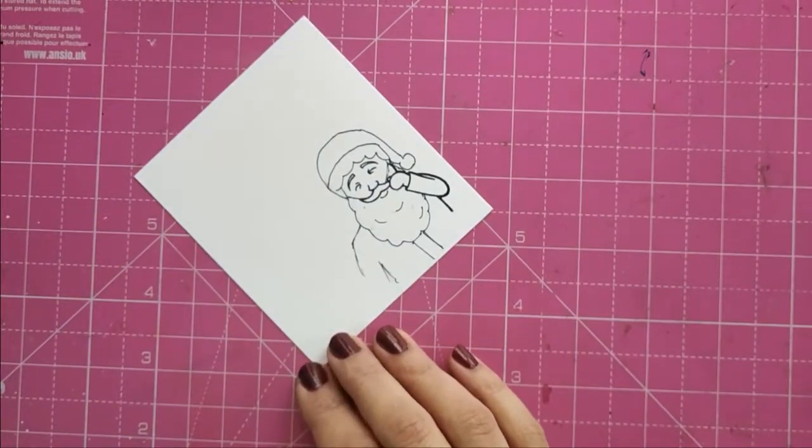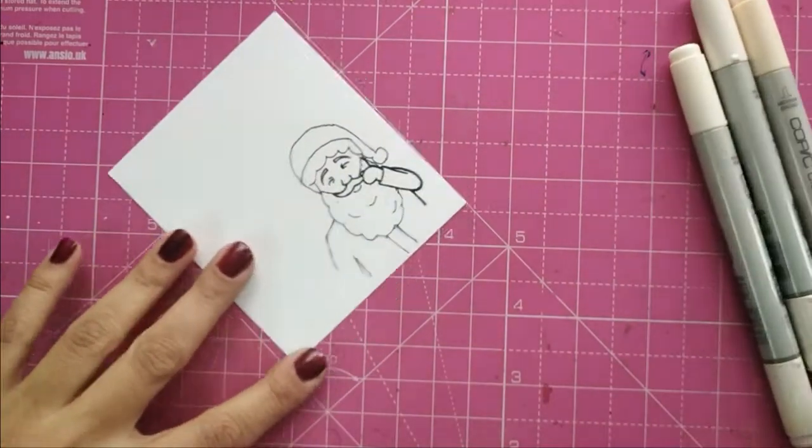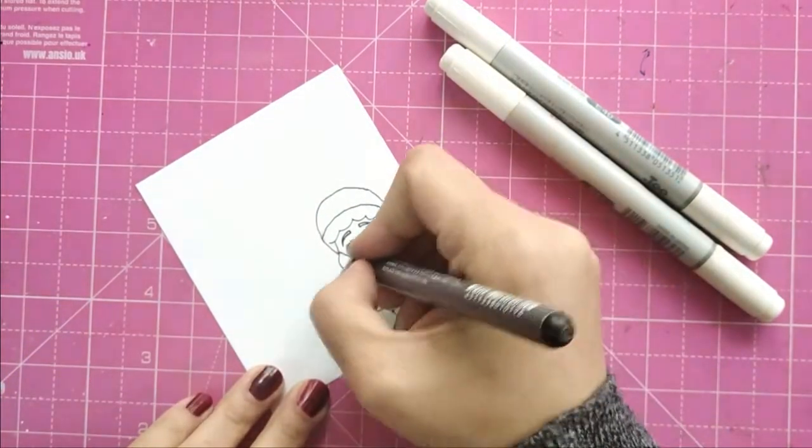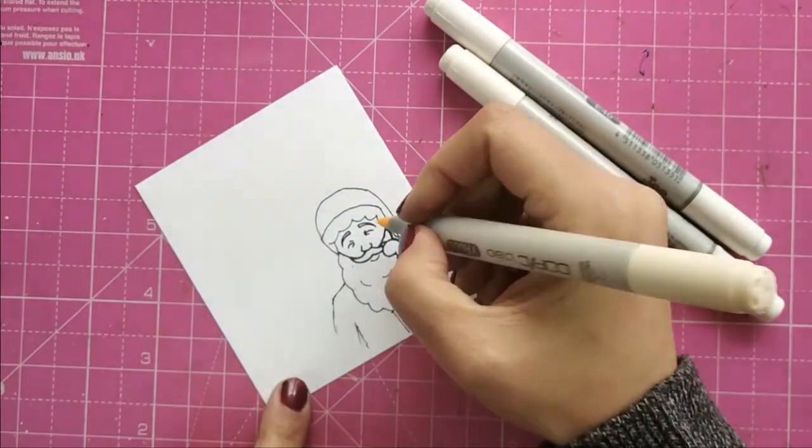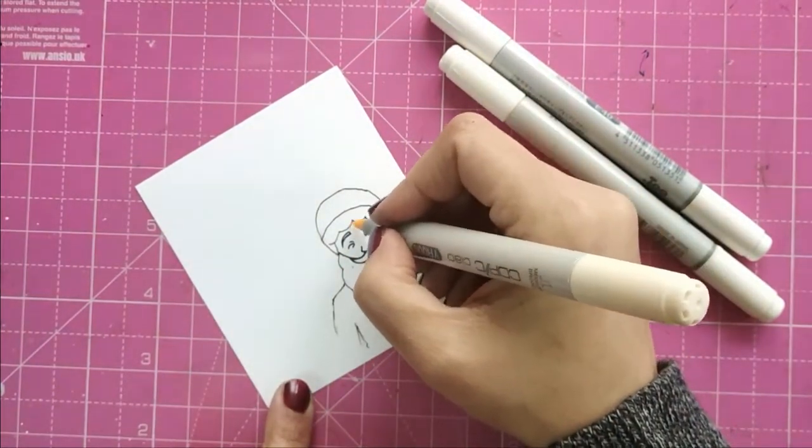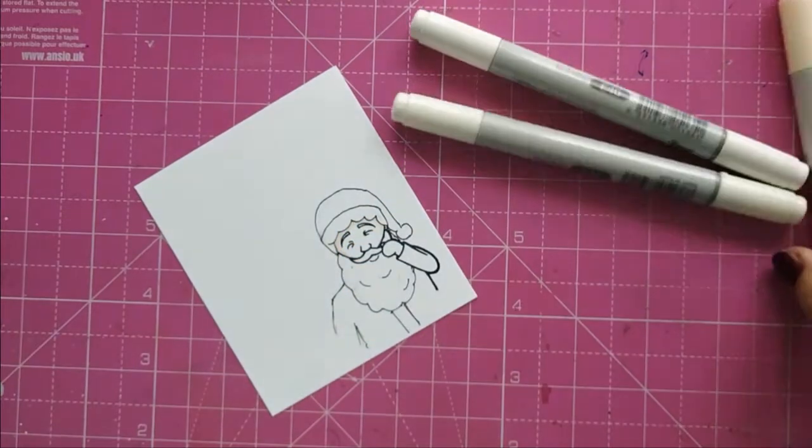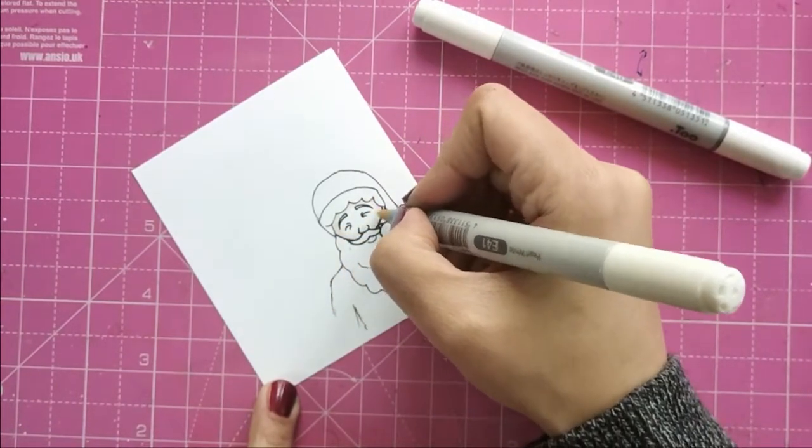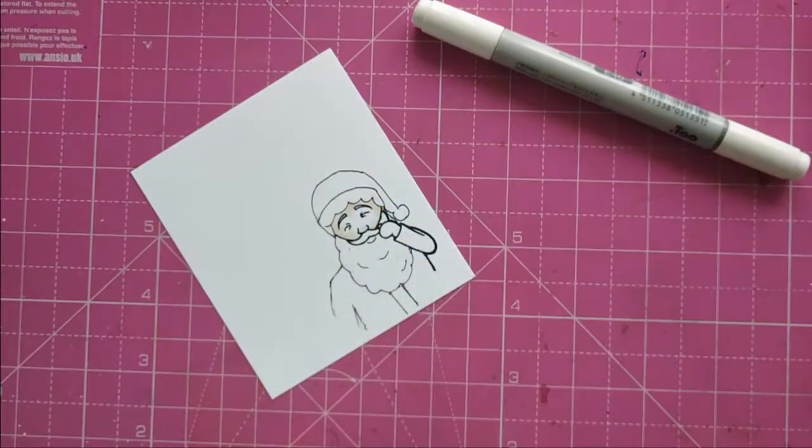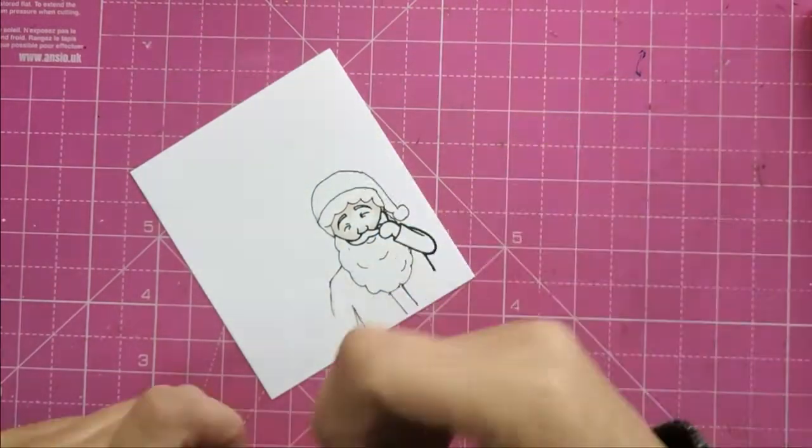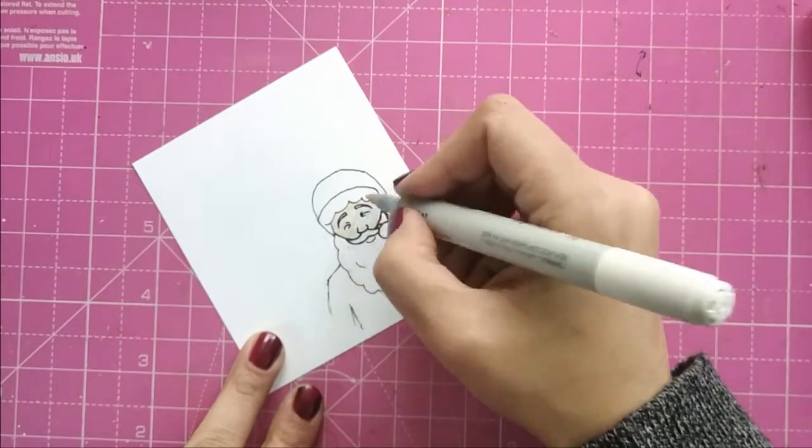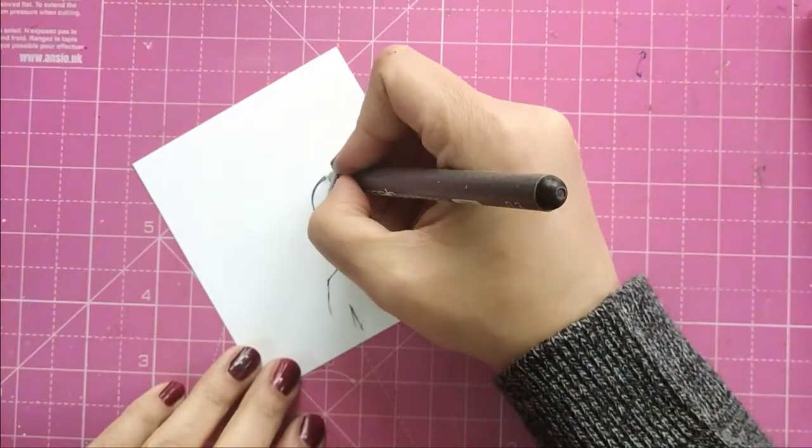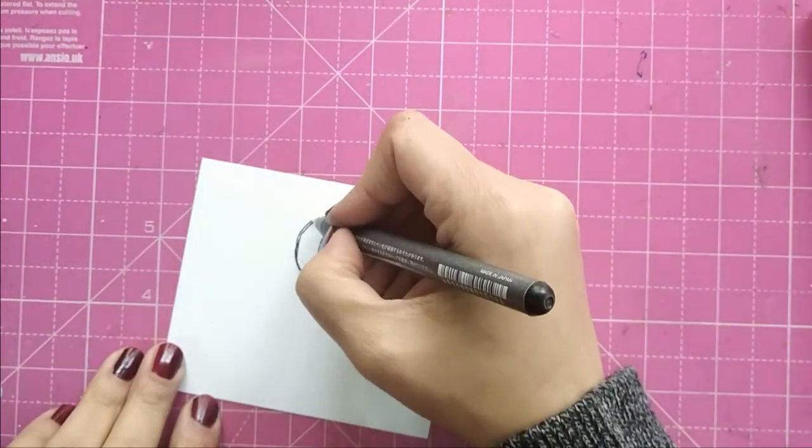Next I do some Copic coloring. For the skin, I have taken YR000, E40, and E41. I thought the cap was a little too big, so I just reduced the height by making some more black lines over it.